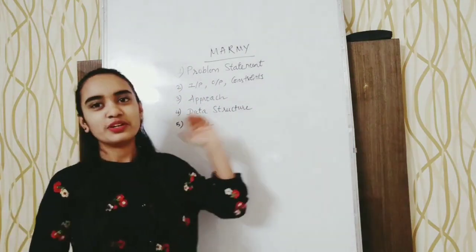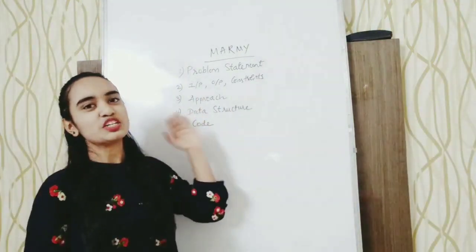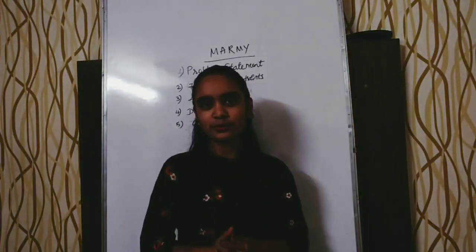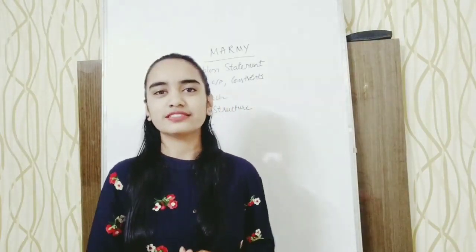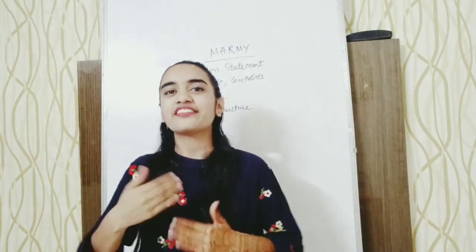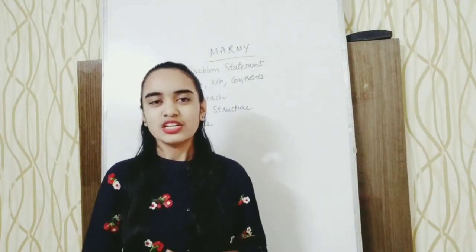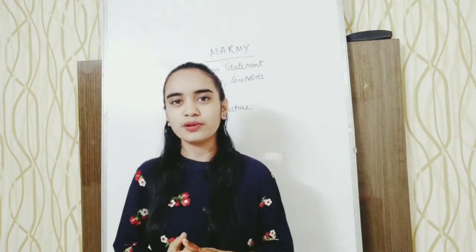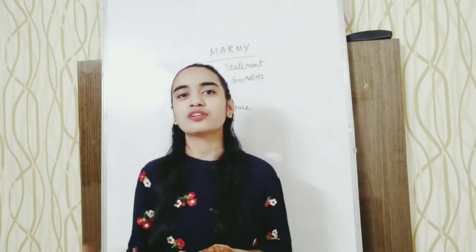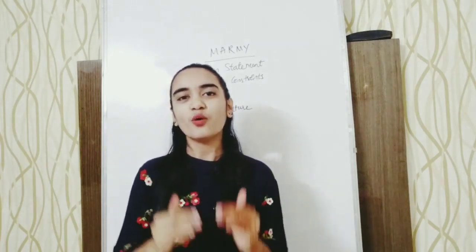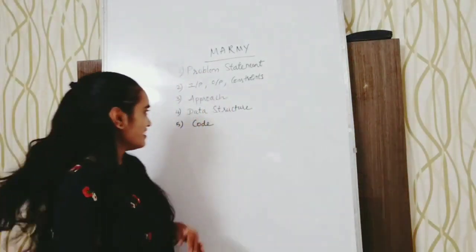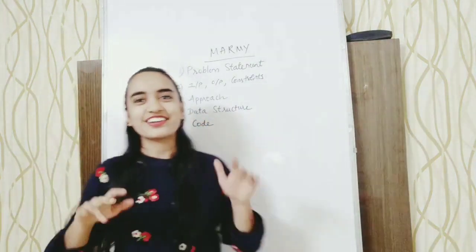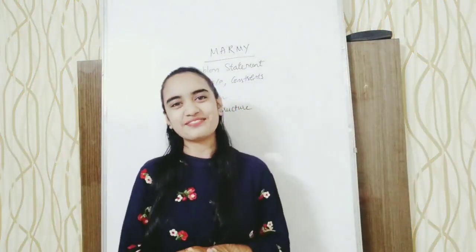First, we'll look at the problem statement and then we'll see the input, output and constraints. Next, we'll see how to approach this problem. Usually how I do that is, first I take down the input and try to write the output by myself. In that process, we get to know what is the main focus of the problem, what data structures are to be applied, what is the algorithm, and all the required things. Then we code.